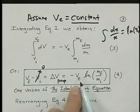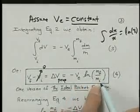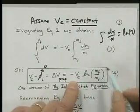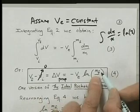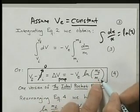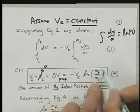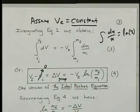And that is minus VE log of m final over m initial. Initially you might wonder, well, what about this negative sign here? It bothers me. Well, it's going to be positive because m final is smaller than m initial. So the log of a number less than 1 will be negative. That negative will cancel this negative. We'll get a positive number.